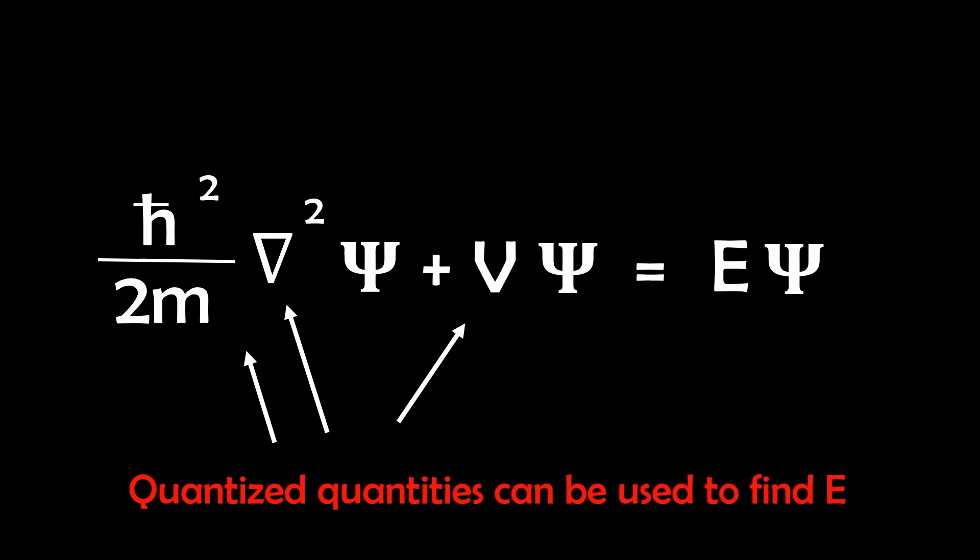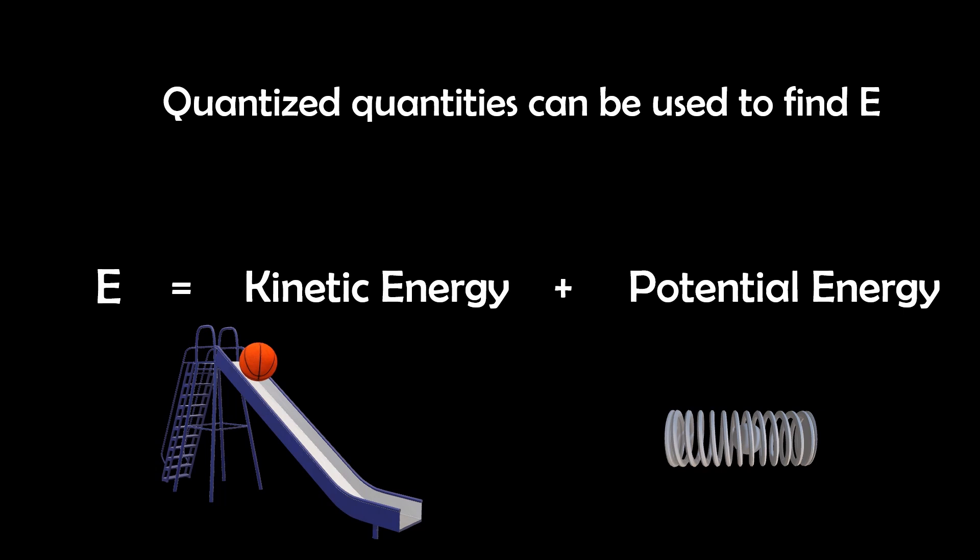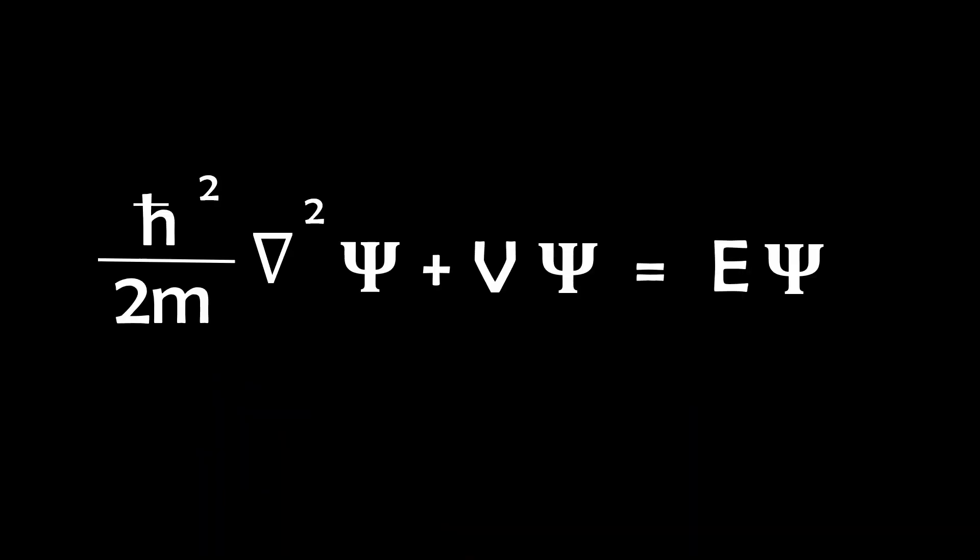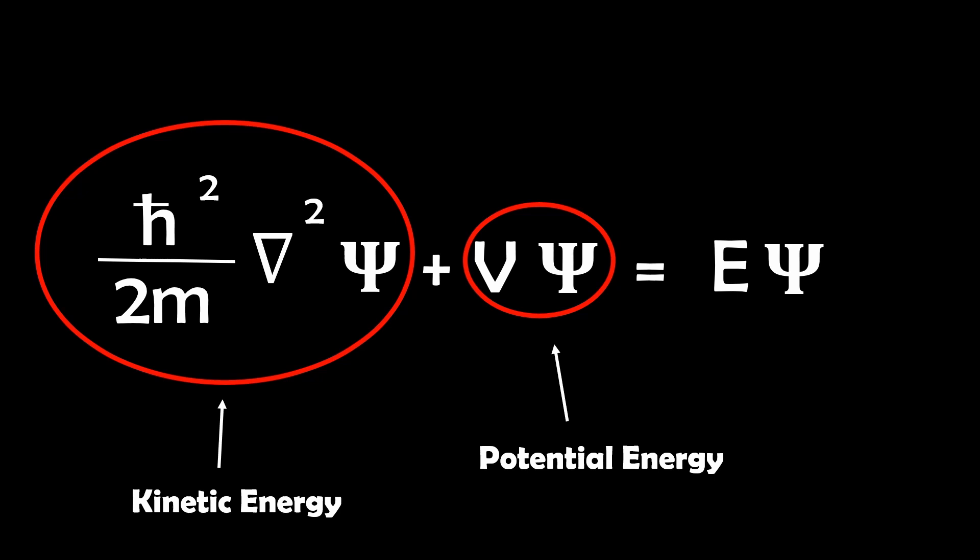So energy in a system or E is a combination of kinetic and potential energy. Sometimes potential energy is represented as this V. So if this term here is the potential energy then the other term is the kinetic energy. Solving for both kinetic and potential energy allows us to determine the energy levels.